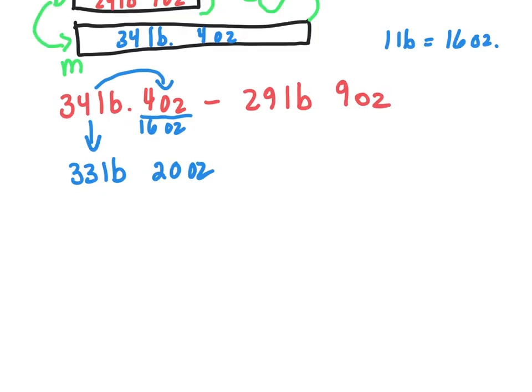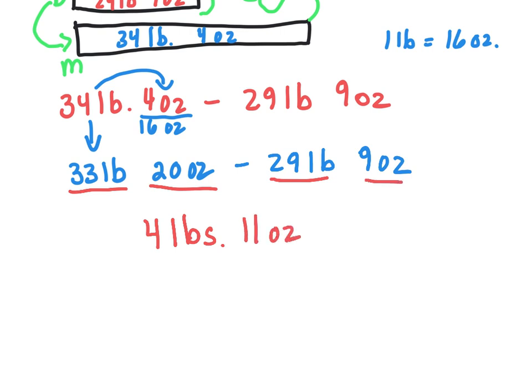All right. So now we can subtract. We can do everything now. We can bring down our 29 pounds and our 9 ounces. And now we're able to subtract. So we're going to set it up by when we take away our 33 pounds and 29 pounds, we're going to get 4 pounds and 20 ounces. Take away 9 ounces, I'm going to get 11 ounces. So how much he gained from December to March, our friend Rocky, is 4 pounds and 11 ounces.